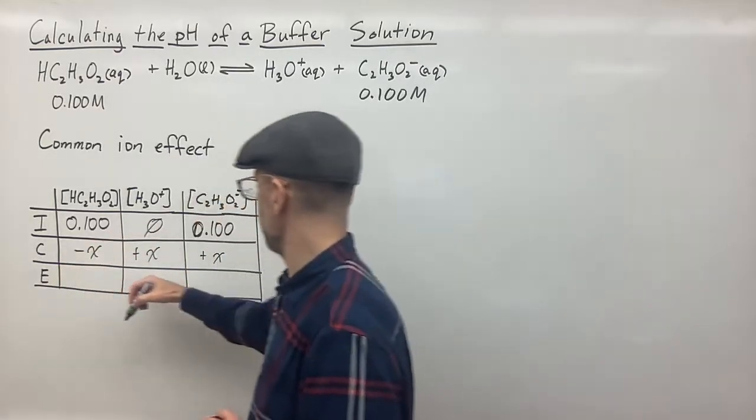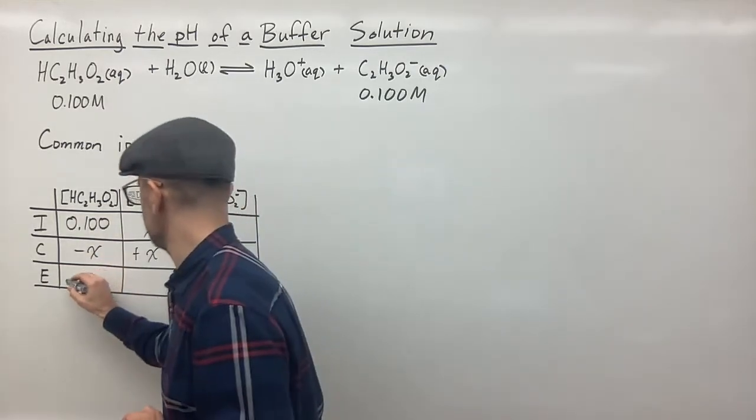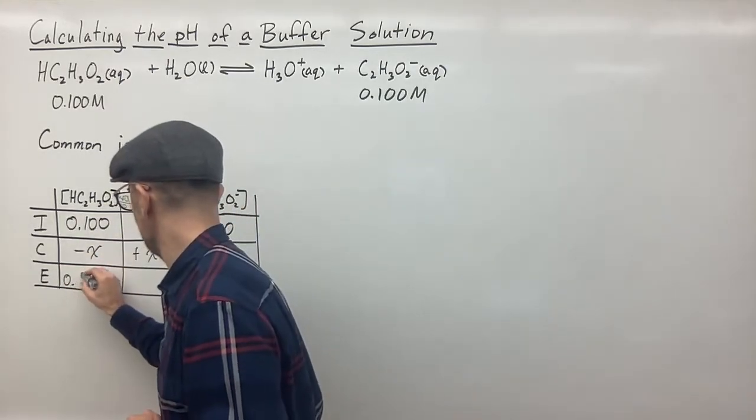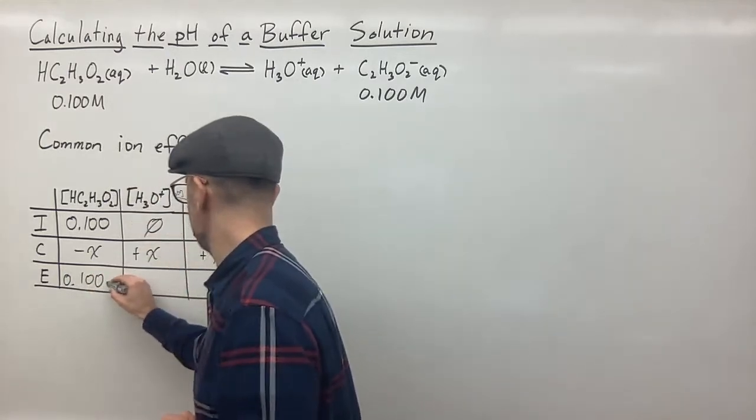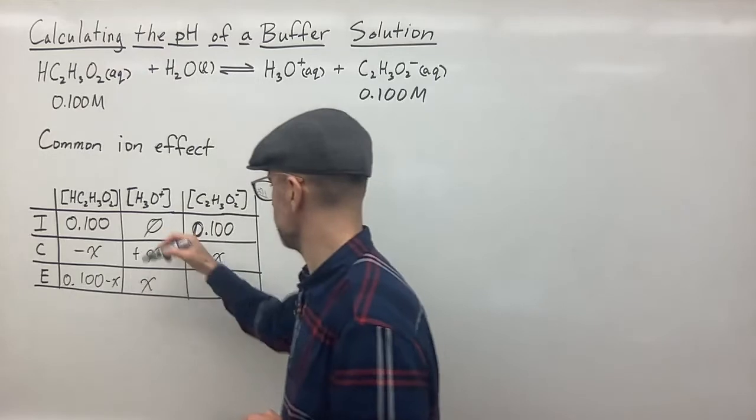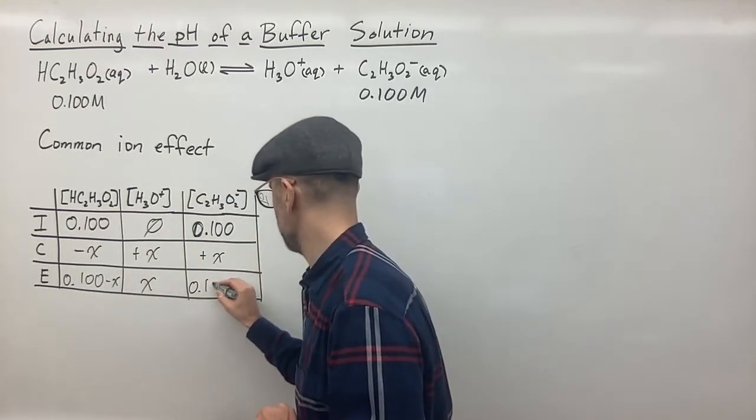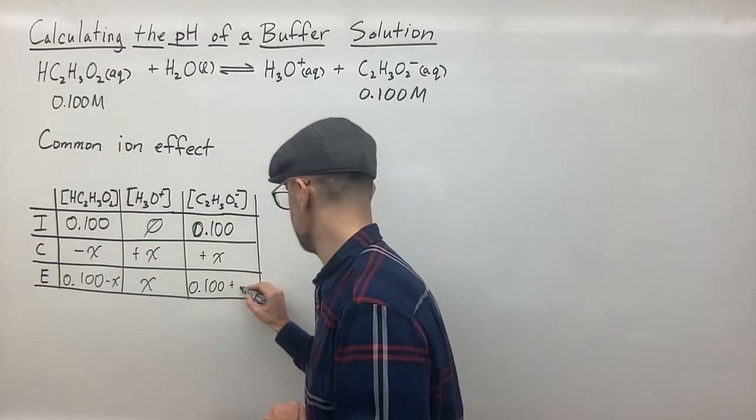We figure out our equilibrium expressions for each of the species. So this is going to be 0.100 minus x. This is going to be just x because 0 plus x is x. And here we have 0.100 plus x.